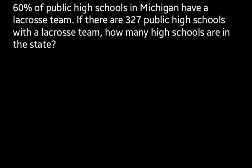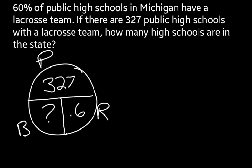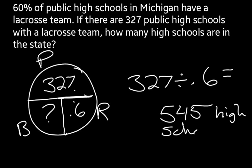This question says: 60% of public high schools in Michigan have a lacrosse team. If there are 327 public high schools with a lacrosse team, how many high schools are in the state? This asks for the base. Looking at our PBR circle: the rate is 60%, which converts to 0.6 as a decimal. The portion is 327, representing the schools that have a lacrosse team. What we don't know is the base — the total number of high schools. Since the portion is on top and we're missing the base, we use the division line: 327 divided by 0.6, which gives us 545. So there are 545 public high schools in Michigan.